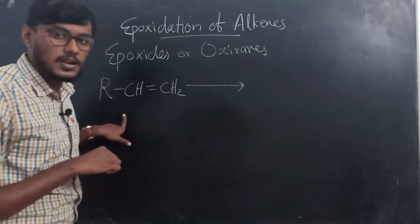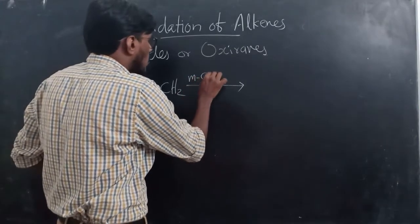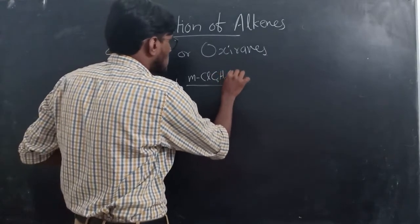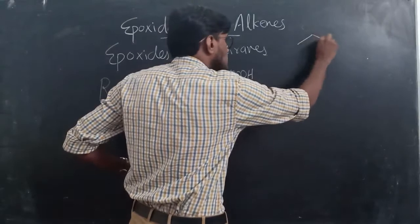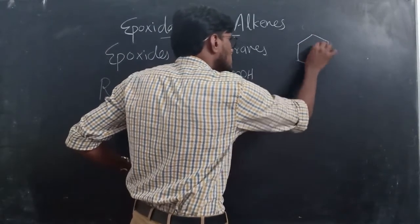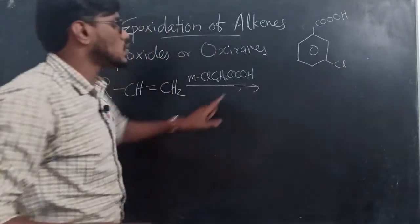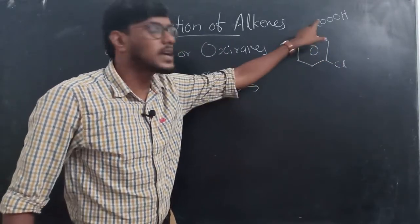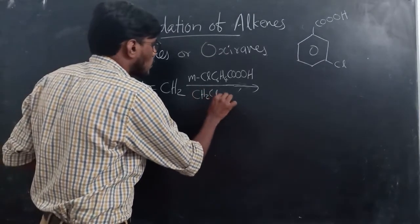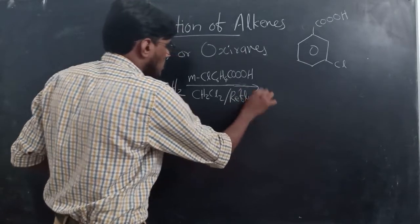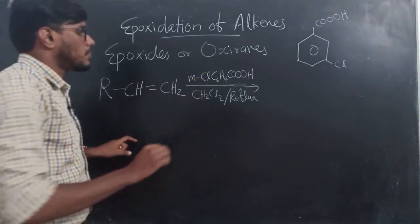This alkene reacts with a reagent called metachloroperbenzoic acid — a peroxy acid with the formula C6H4COOOH, where chlorine is at the meta position. The structure of metachloroperbenzoic acid has a COOH group. In the presence of the solvent dichloromethane, if this compound is refluxed with metachloroperbenzoic acid...